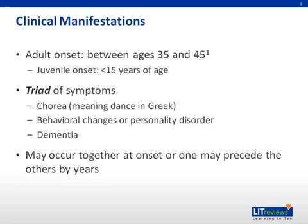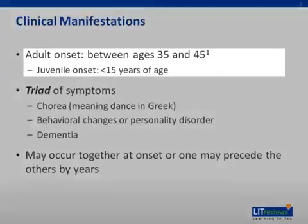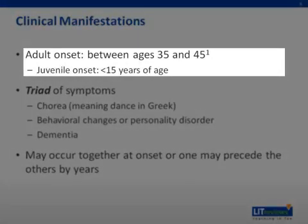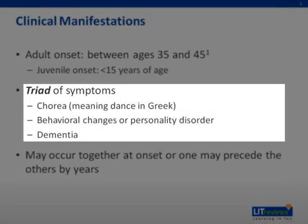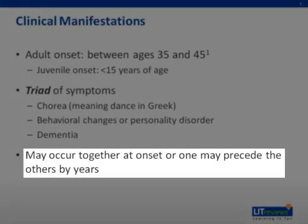Moving on to clinical findings, it is important to note that Huntington's disease can have adult and juvenile onset. Adult onset, which is the more common form, has onset of symptoms between ages 35 and 45, but can occur at any time in a patient's lifespan. Juvenile onset is typically below age 15, but has been reported as early as age 2. A majority of juvenile onset patients have similar symptoms as adults, but some can be more vague, such as a decline in motor milestones or school performance. The triad of symptoms — chorea, behavioral changes, and dementia — are the three most characteristic findings, and can occur together or precede the others by many years.